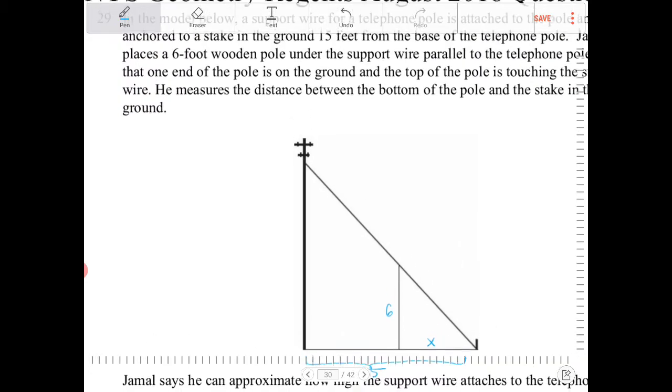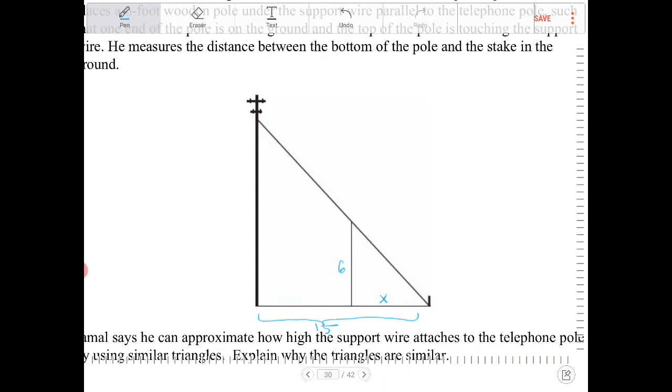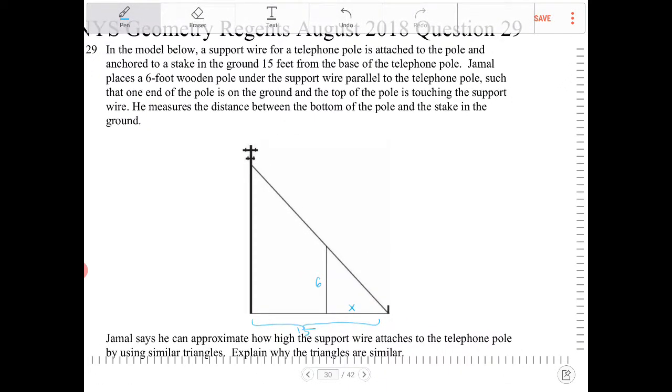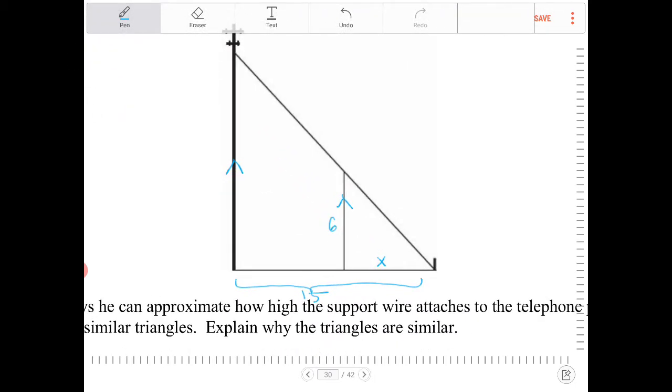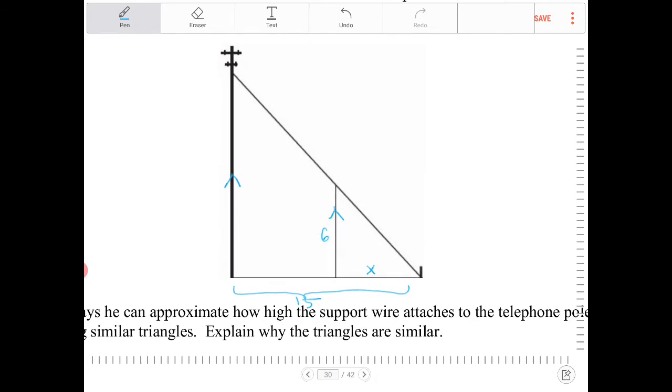It's important to note that the problem description here says that the two poles are parallel. And if you recognize the two poles are parallel, then you should be able to recognize that the ground, both the ground and the wire, the support wire, they act as transversals to a pair of parallel lines.